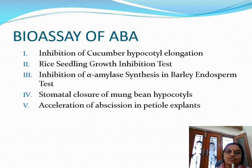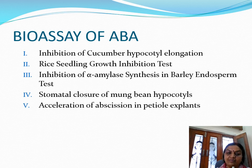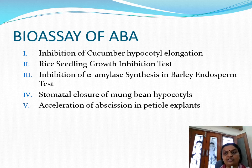The bioassays for abscisic acid include the inhibition of cucumber hypocotyl elongation, the rice seedling growth inhibition test, the inhibition of alpha-amylase synthesis in barley endosperm test, the stomatal closure of mung bean hypocotyls, or the acceleration of abscission in petiole explants.